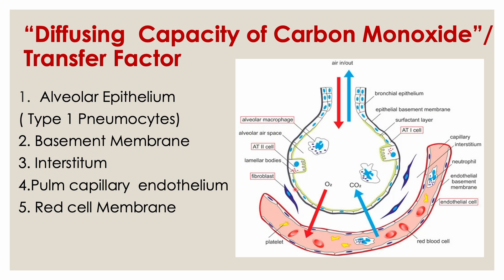After crossing the alveolar epithelium, the gas then has to traverse the epithelial basement membrane, then reach the interstitial space — the interstitium — followed by the capillary endothelium, and then it traverses across to the red blood cell. At this level, the exchange takes place. So anything occurring from the airways into the alveoli and between the alveoli and the capillaries is where diffusion problems will be detected.